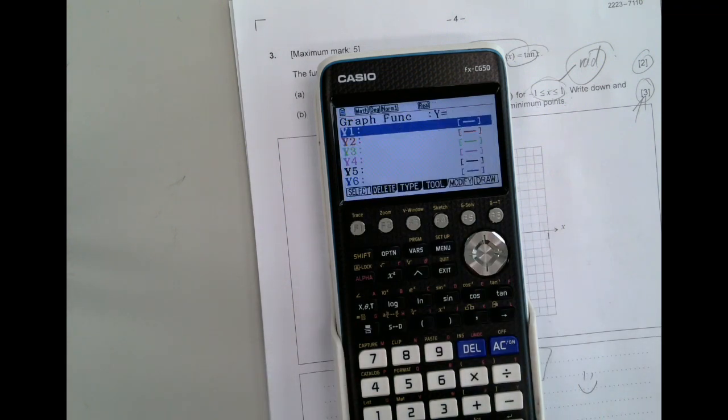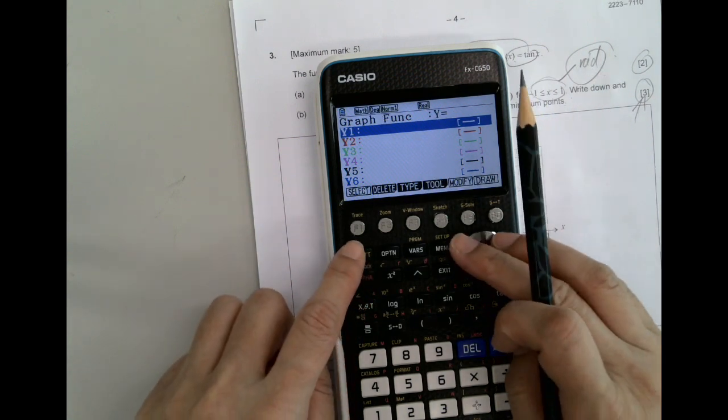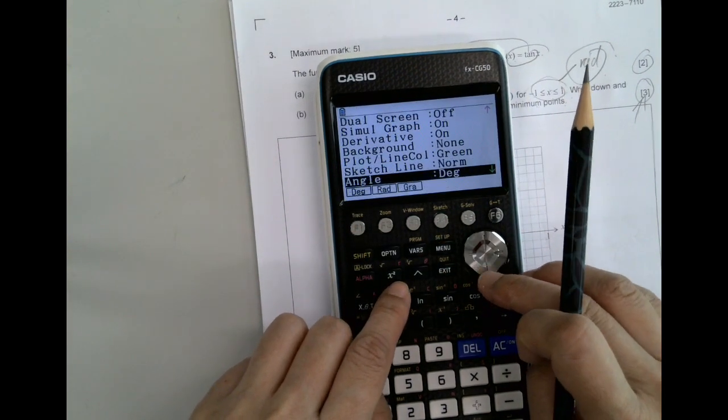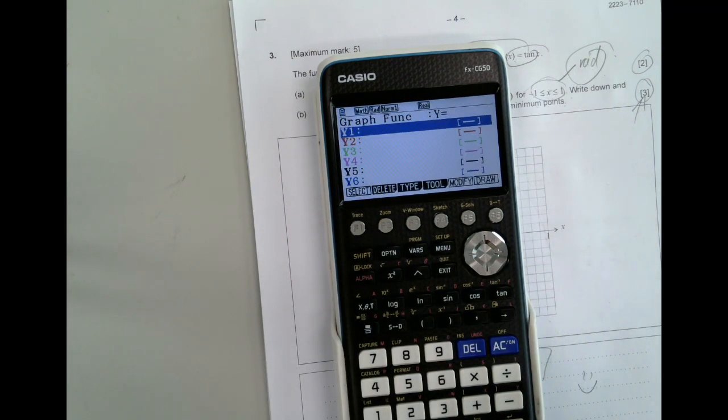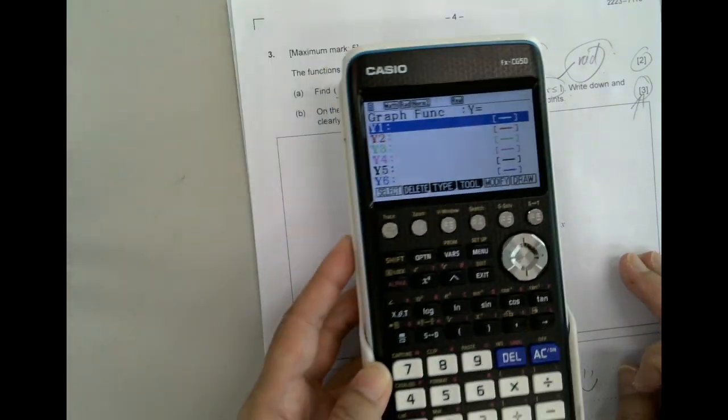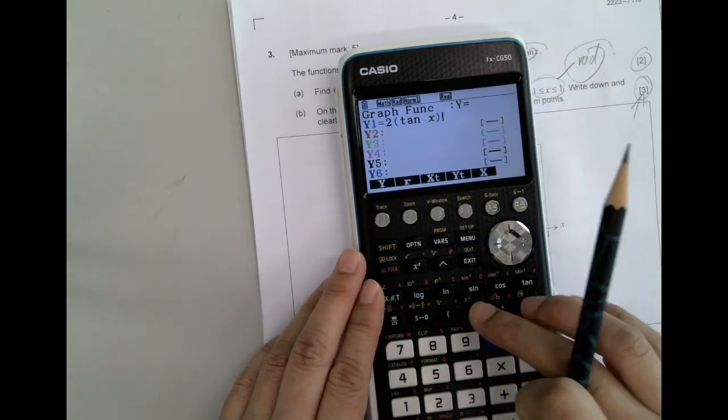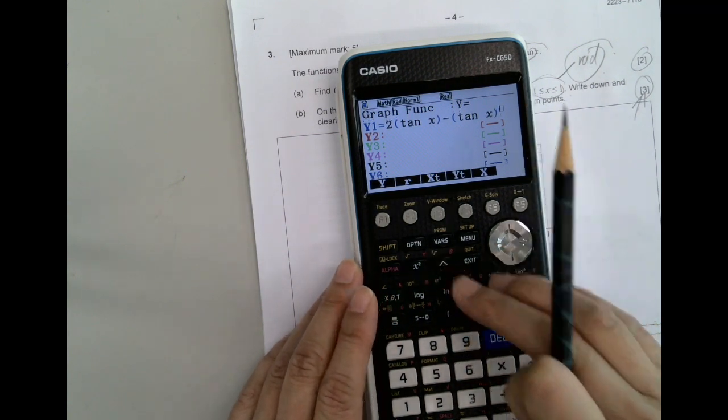So first of all, get to our calculator. We do some graphing, but then I want radian. The calculator is in degree, so we change that. Switch out, switch down, and you find radian there. All right, and then we just key in our equation. We have 2 sin x minus tan x cubed.